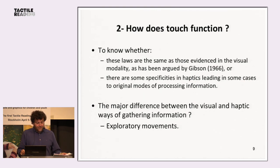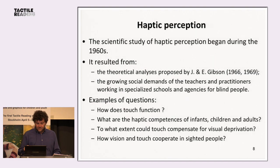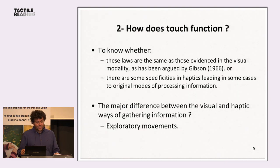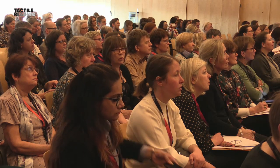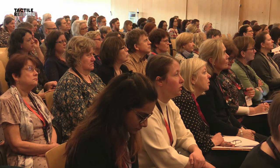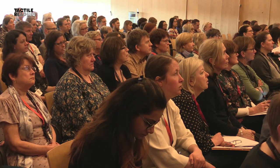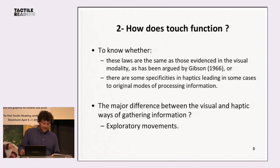In spite of this complexity, interest in the scientific study of haptic perception began during the 1960s, resulting from theoretical analysis proposed by Gibson and growing social demands from teachers and practitioners working in schools for blind people. Questions arose such as: how does touch function? What are the haptic competencies in infants, children, and adults? To what extent could touch compensate for visual deprivation? How do vision and touch cooperate in sighted people?